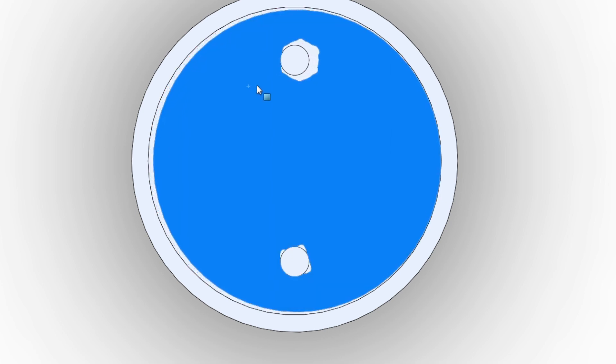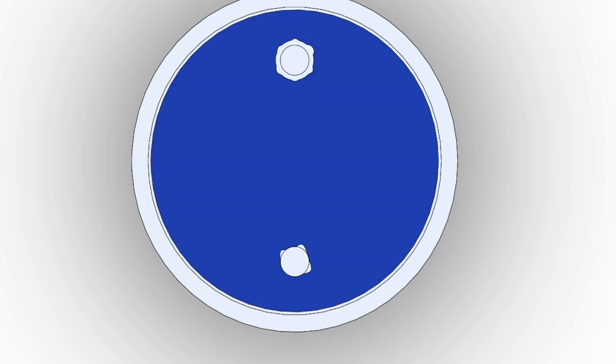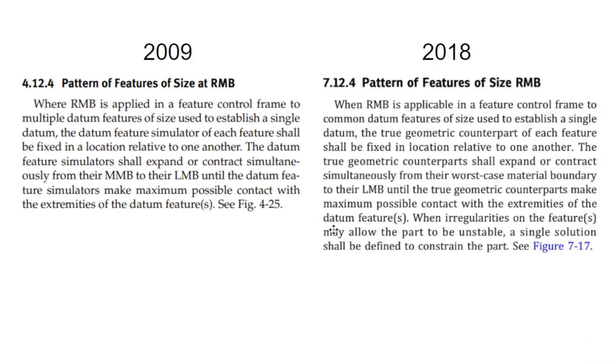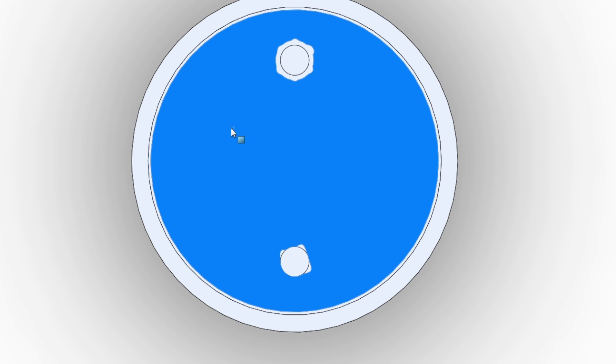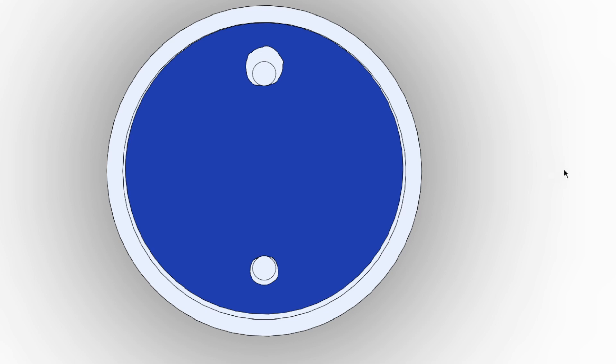They've corrected that in the 2018 version. They've added this second bit here, which is what it's talking about: when irregularities of the feature may allow the part to be unstable, a single solution shall be defined to constrain the part. So on your drawing you might say, let's say you had a flat or some sort of marking feature, you would say okay, in a case where it's unstable, you push it all the way to the right or something like that, or the left, or some way, or maybe there's a mathematical way to do it.